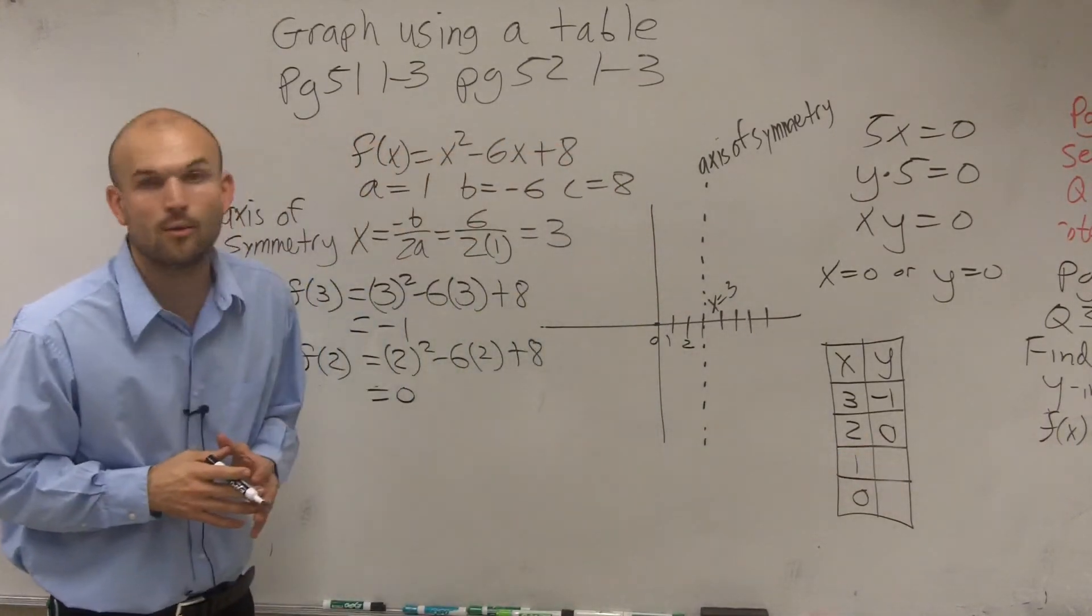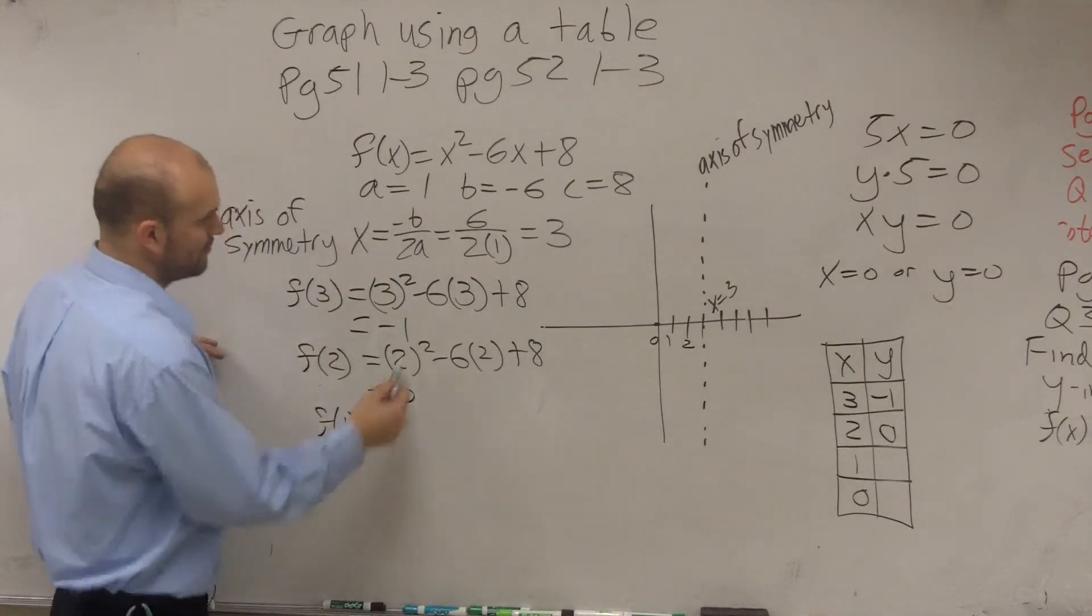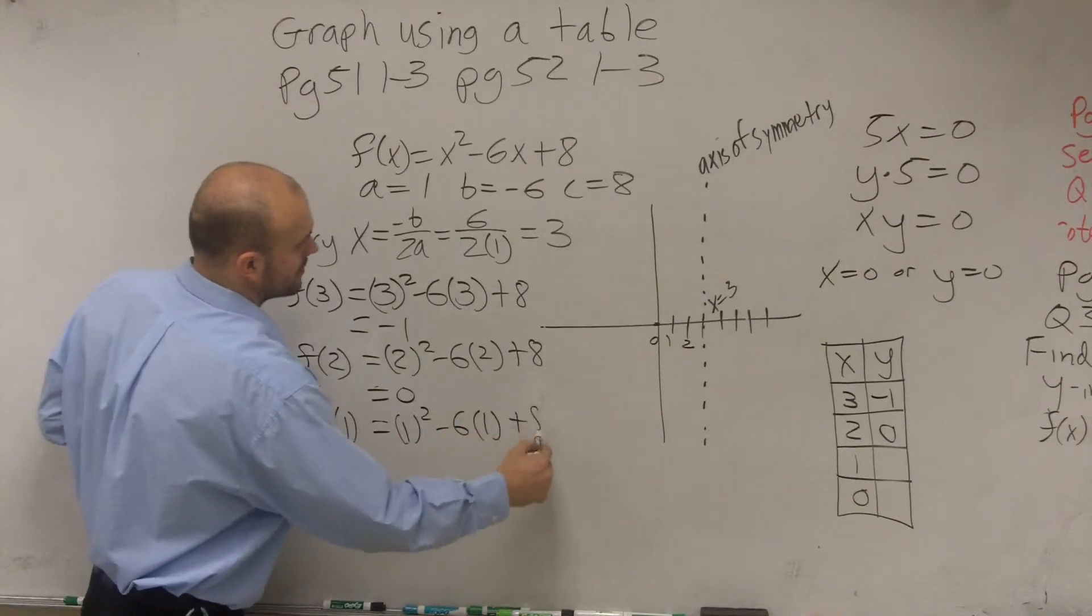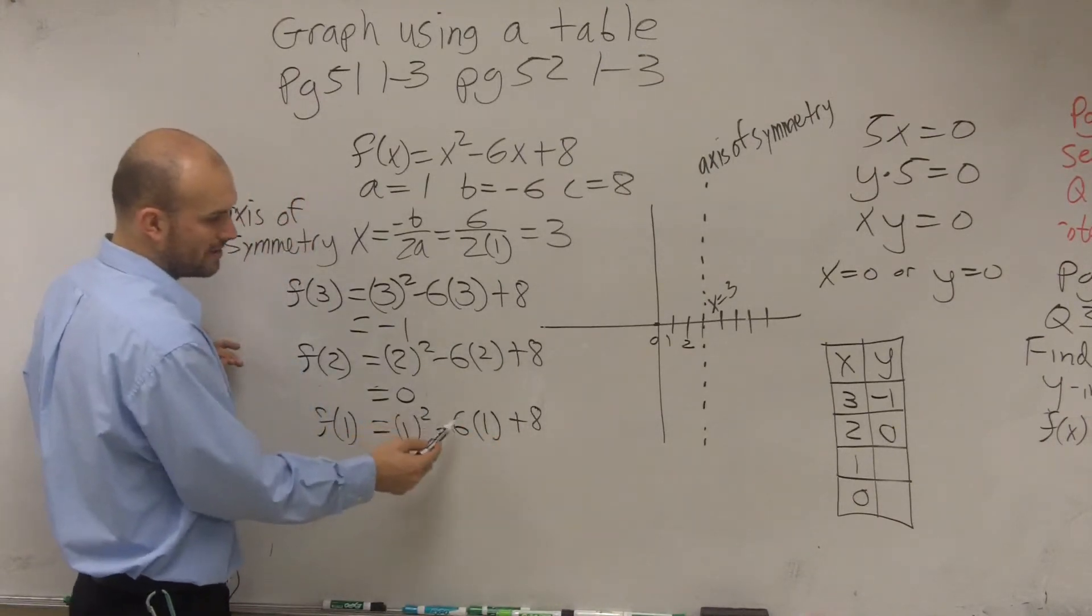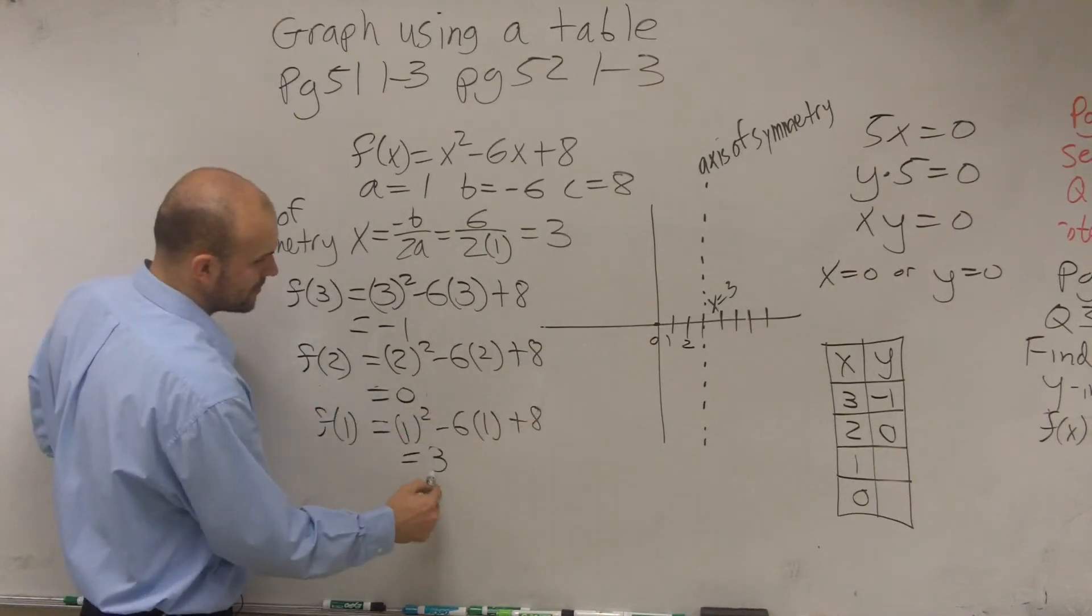Now let's go and check in at 1. So we have f of 1. We plug in 1 now: 1 squared minus 6 times 1 plus 8. 1 squared is 1 minus 6 is negative 5, plus 8 is equal to 3.